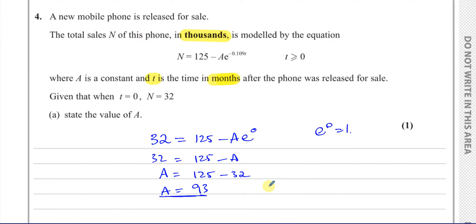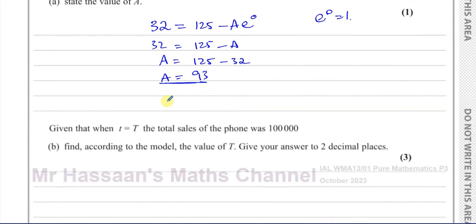125 minus 25 is 100, seven left to take away, so yes, 93. That's part a done.